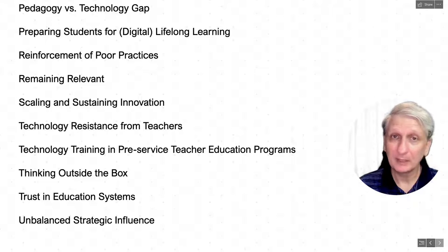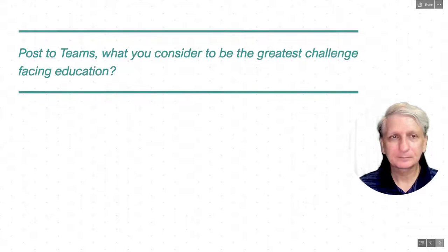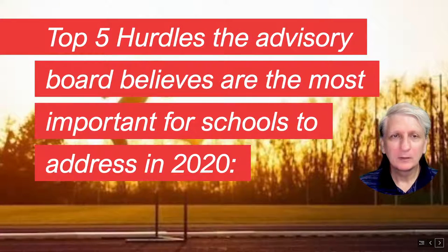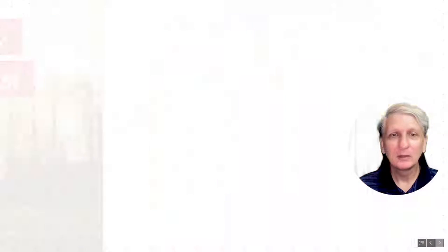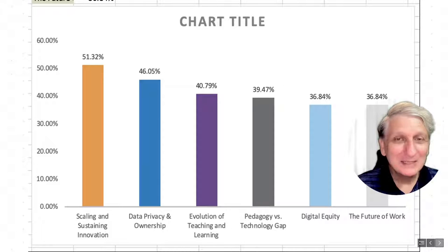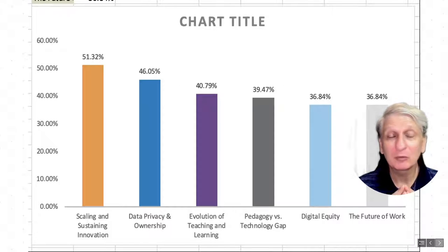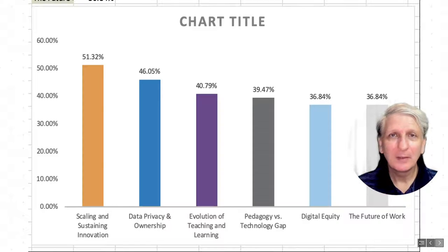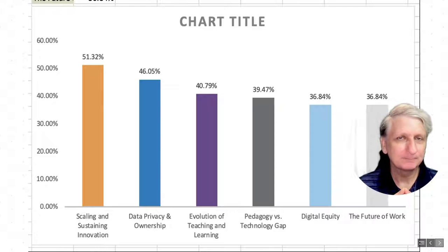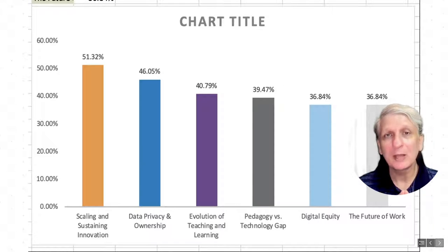These lists were developed before the pandemic, which has obviously had an impact upon how we interpret some of the challenges and opportunities around educational technology. The top six hurdles identified in 2020 were scaling and sustaining innovation — which has been consistently a significant challenge for many years. We come up with great ideas, but having them occur beyond a few lighthouse institutions and schools, and having them become systematized across a nation, has proven much more challenging than originally anticipated.